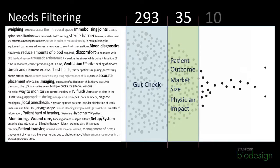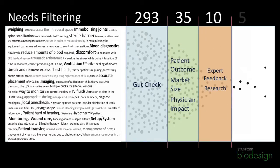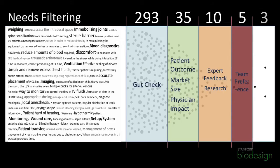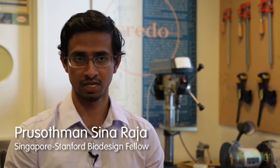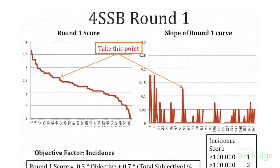The filters our team used for need screening progressed as we went along and knew more and more about the needs. Initially we had a smaller set of filters, and then as we continued to narrow down our list, we added more complexity to our need filtering algorithm. We used formulas, weightings, and scales.